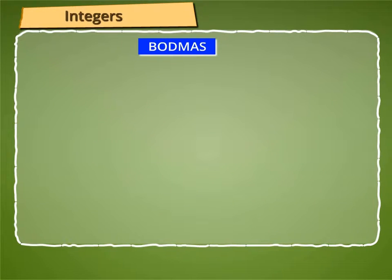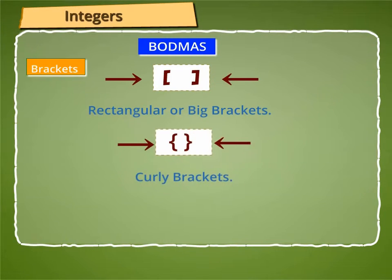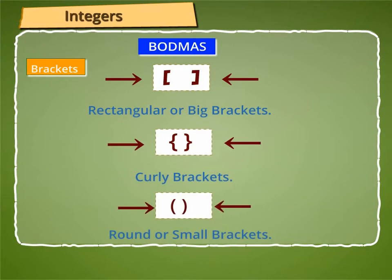Let us now learn about some of the brackets. The following are different kinds of brackets. A — this is generally known as rectangular or big brackets. B — this is generally known as curly brackets. And C — this bracket is generally known as round or small brackets.